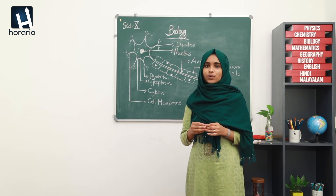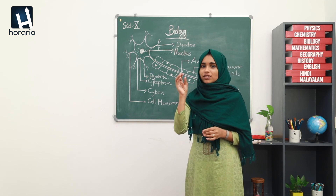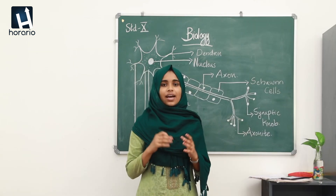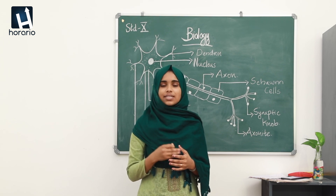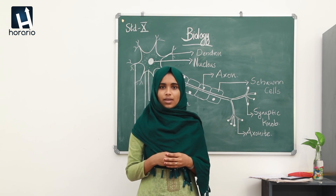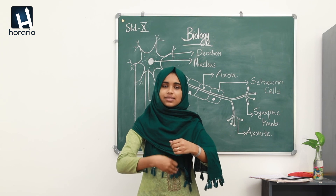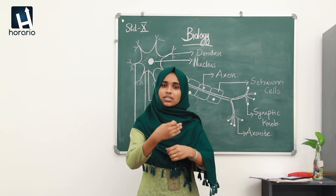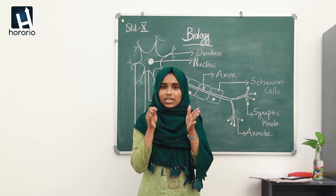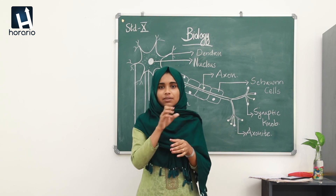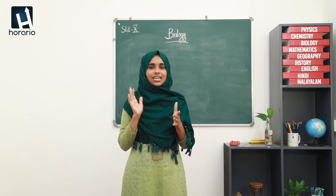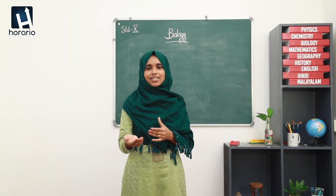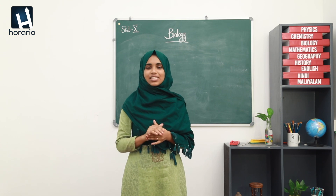There is a task for you — please prepare a table showing the main parts of the neuron and their functions. Also, Schwann cells are not a part of the neuron but encircle the axon repeatedly, around 200 to 300 times. In the coming class we will discuss more about Schwann cells.